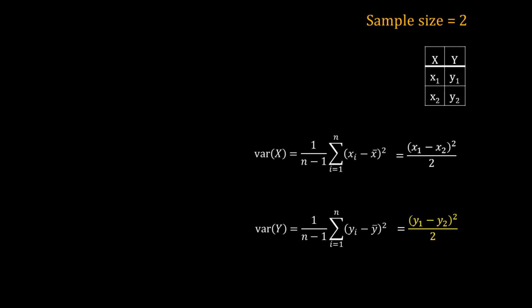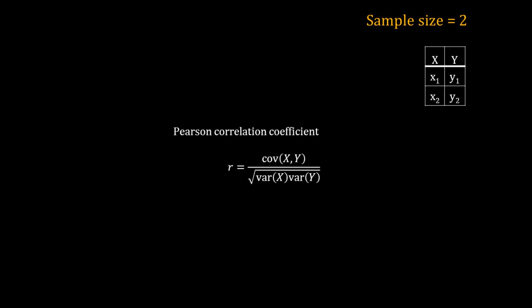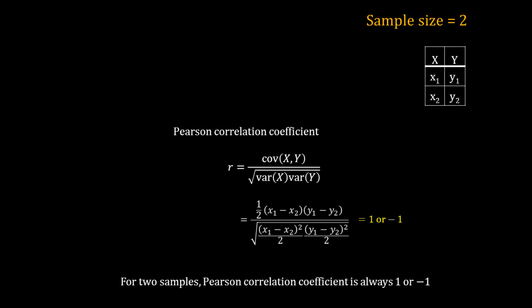Now let us put together all the variances and covariances to calculate the Pearson correlation coefficient r. r equals covariance between x and y divided by the square root of variance of x times variance of y. Replacing the covariance and variances, the terms in the numerator and denominator cancel, and you get plus 1 or minus 1.